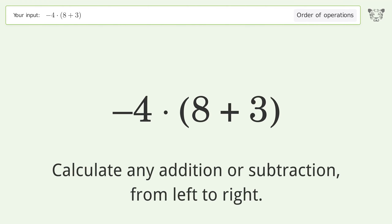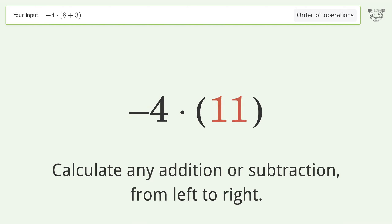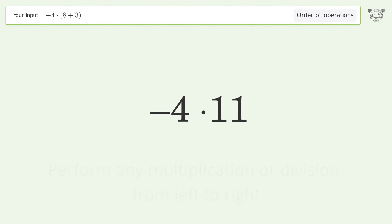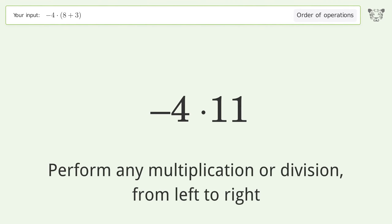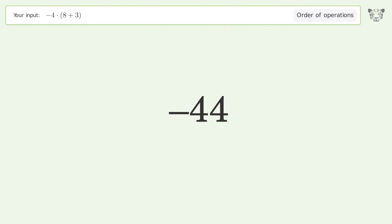Calculate any addition or subtraction from left to right: 8 plus 3 equals 11. Perform any multiplication or division from left to right: negative 4 times 11 equals negative 44. And so the final result is negative 44.